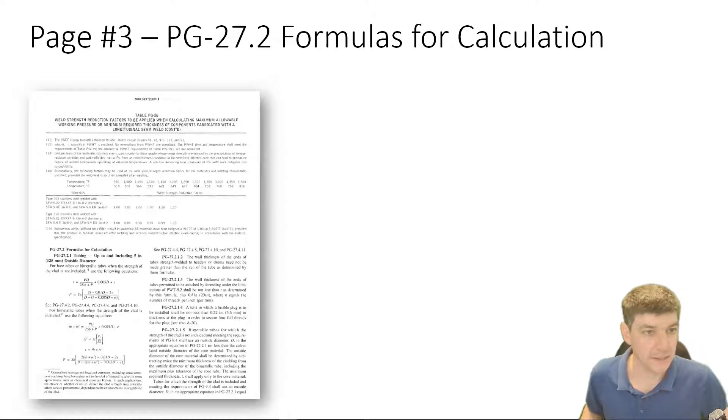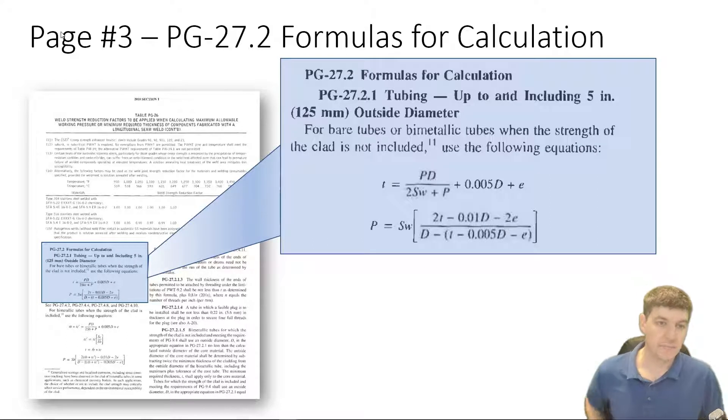So if we flip ahead a couple of pages to page number three of your document, what you have is PG 27.2 formulas for calculation. And if we look at PG 27.2, this is our first equation that we get. And what it is, is for tubing.